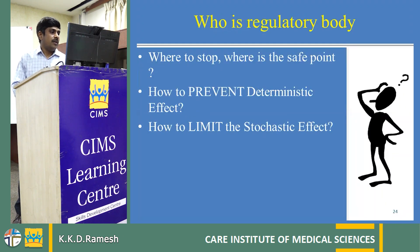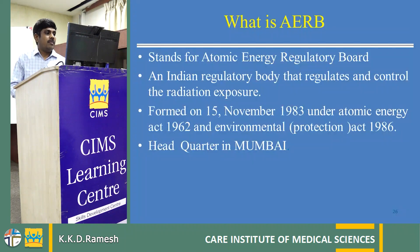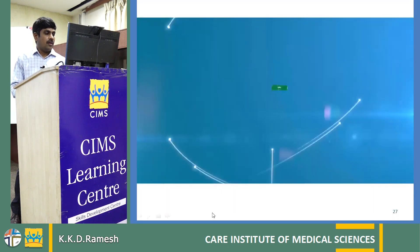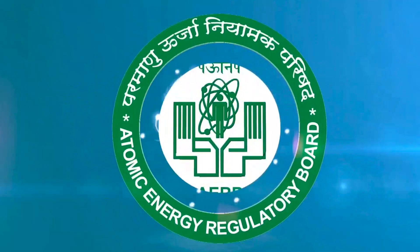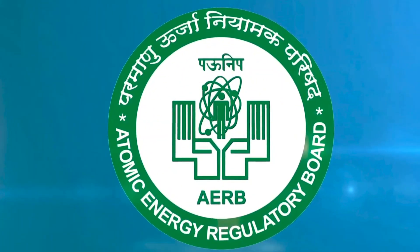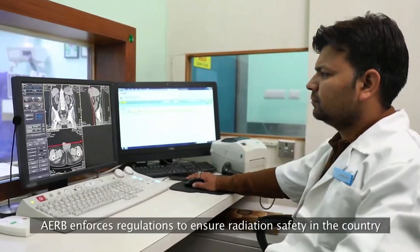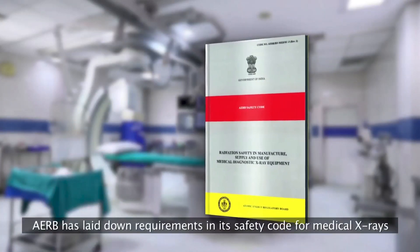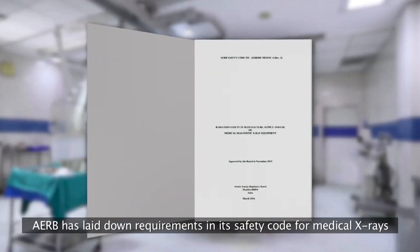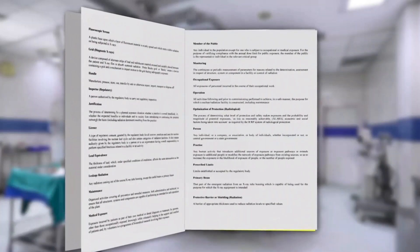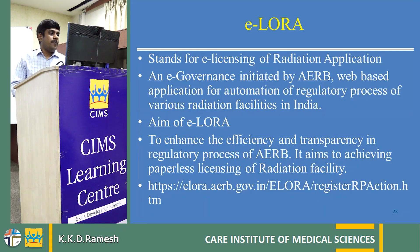Which is the regulatory body? How can we limit radiation exposure? The answer is AERB — Atomic Energy Regulatory Board — an Indian regulatory body that regulates and controls radiation exposure. AERB is a Government of India organization that enforces regulations to ensure radiation safety in the country. It has laid down requirements provided in its safety code for medical X-rays.